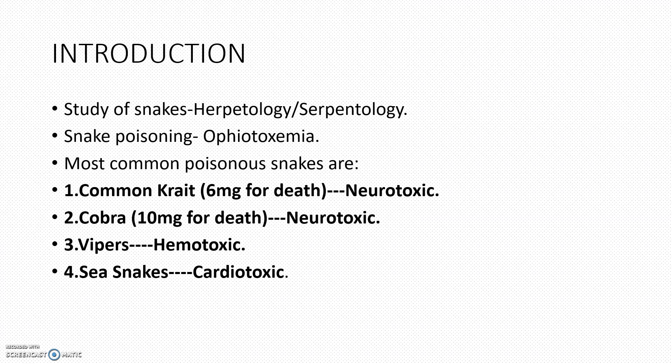The most common poisonous snakes are the common krait, the cobra, the vipers, and the sea snakes. The common krait is neurotoxic and the cobra is also neurotoxic. Vipers are hemotoxic and sea snakes are cardiotoxic or myotoxic.